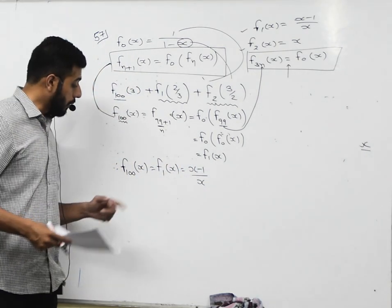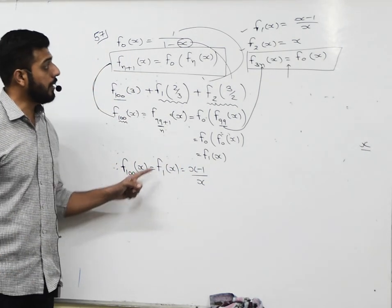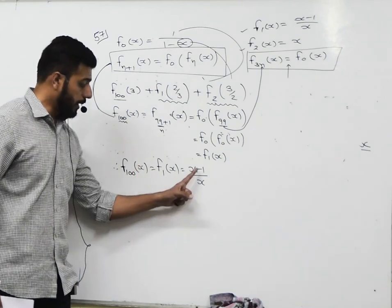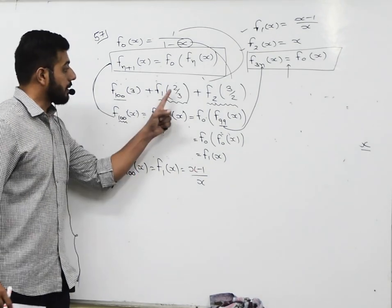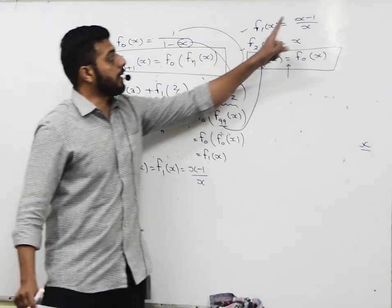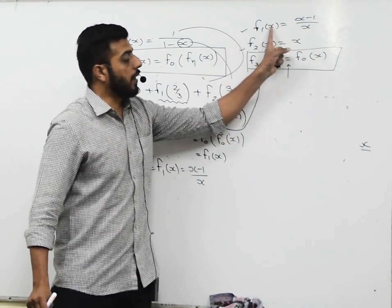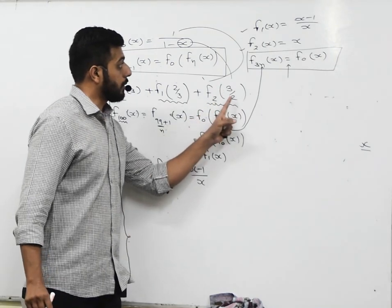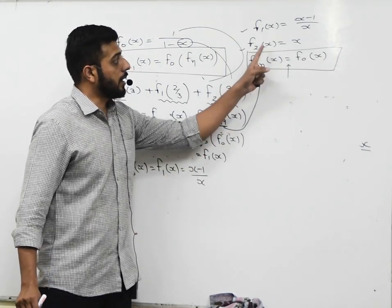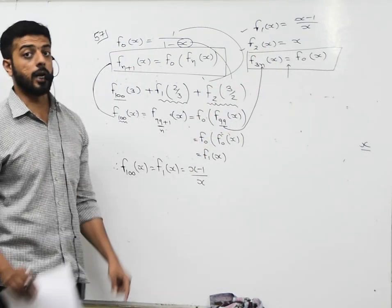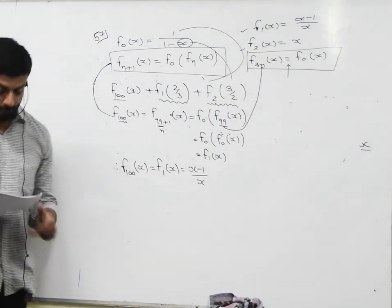Now put the values according to the question: x = 3 for f₁₀₀, x = 2/3 in the definition of f₁, and x = 3/2 in the definition of f₂. Substituting these values will give the final answer.